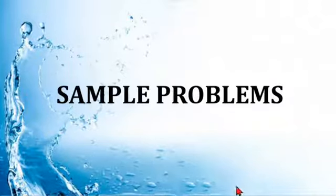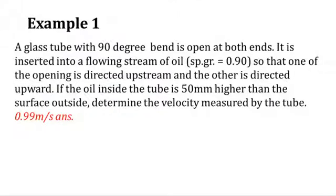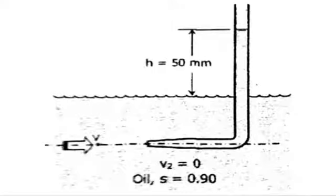Okay, here we are with examples of pitot tube problems. We have example number one: a glass tube with 90 degree bend is open at both ends.